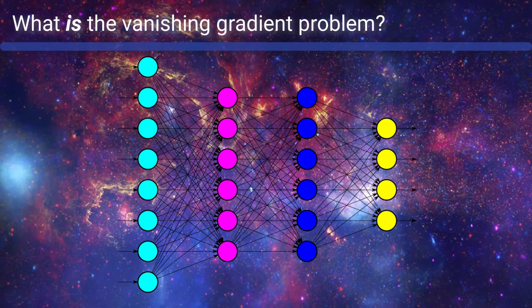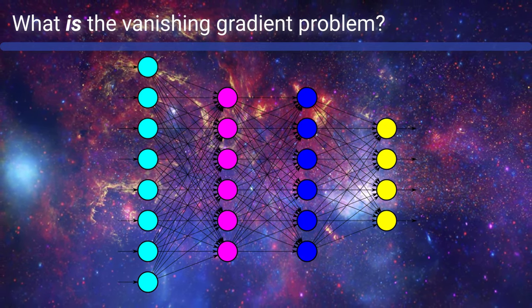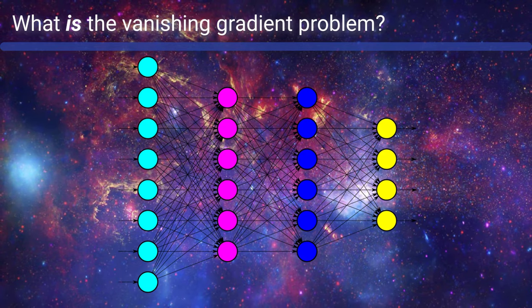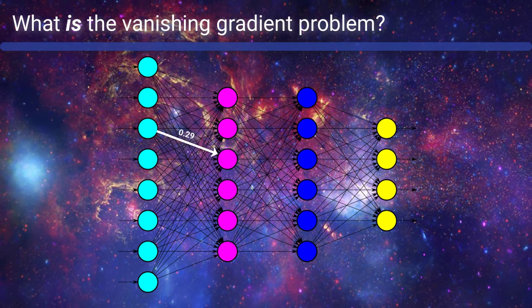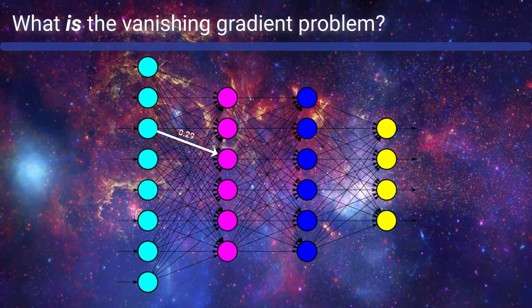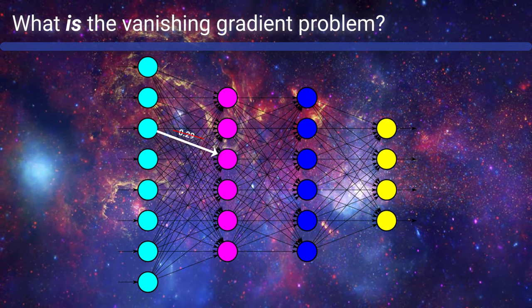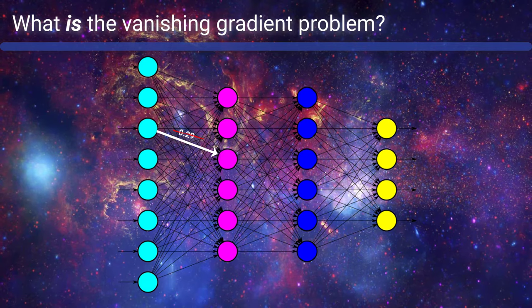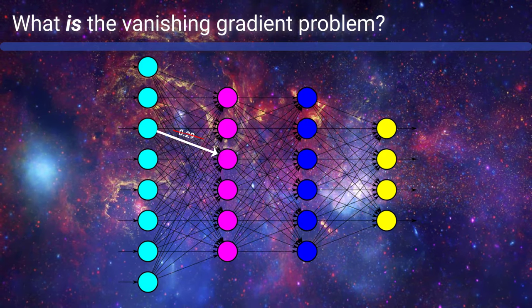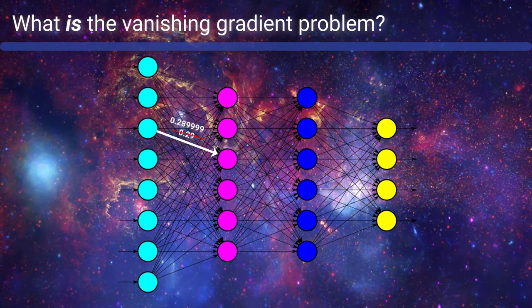OK, what's the big deal with a small gradient? Well, once SGD calculates this gradient with respect to a particular weight, it uses this value to update that weight. So the weight gets updated in some way that is proportional to the gradient. If the gradient is vanishingly small, then this update is in turn going to be vanishingly small as well.